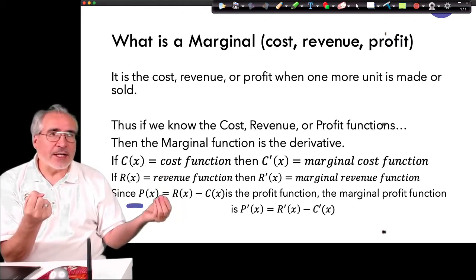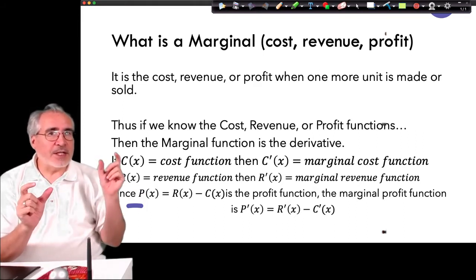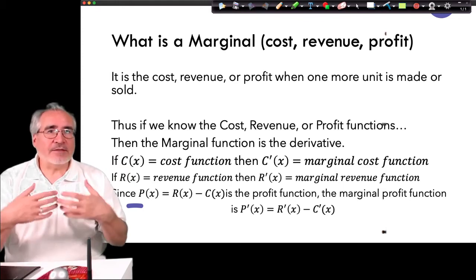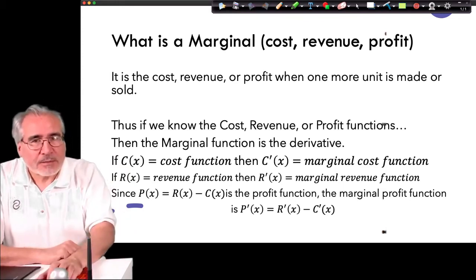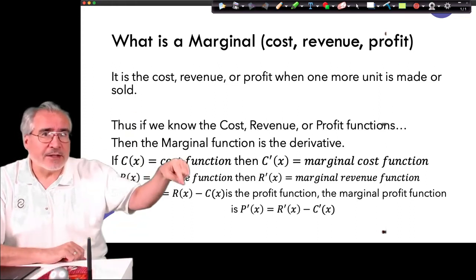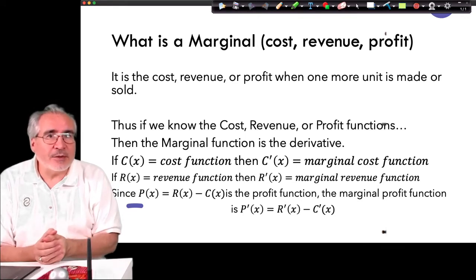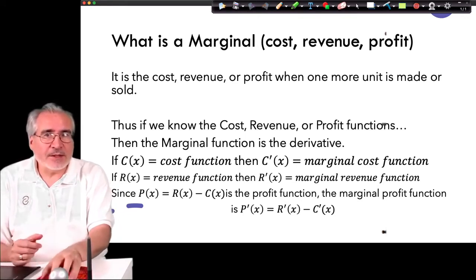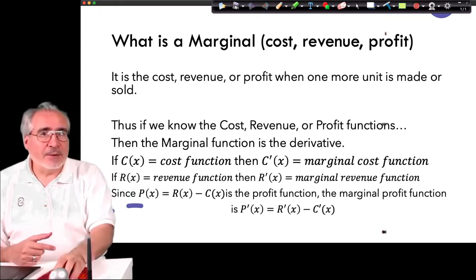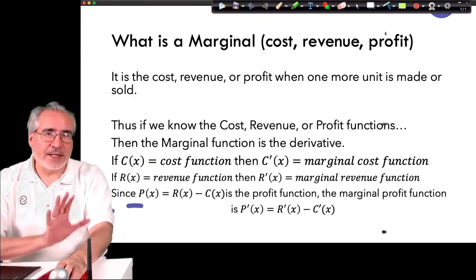Usually the cost comes first in the formula, but revenue is all the money that comes in from sales. Typically if we know the sale price and how many we sold, we multiply those to get revenue. Profit is what's left over — revenue minus cost. Watch whether you're dealing with the marginal function (the derivative) because you're interested in that next item or unit, or whether you want the total. For example, profit from selling 500 units uses the original profit function P(x).